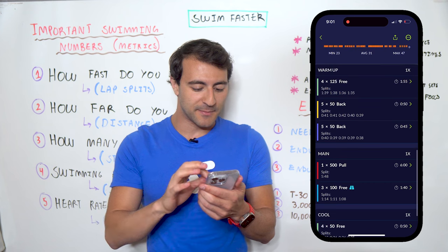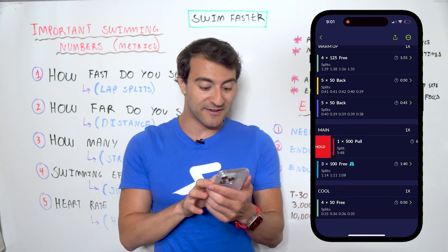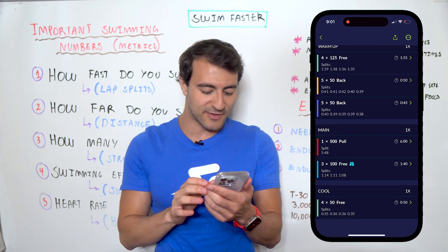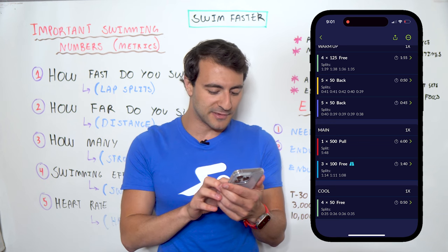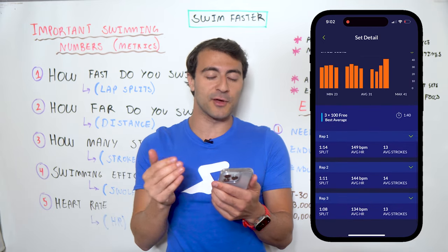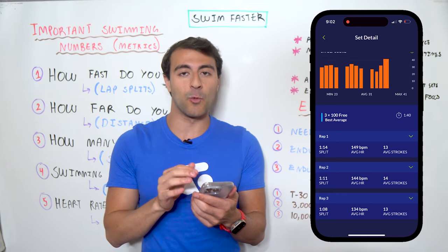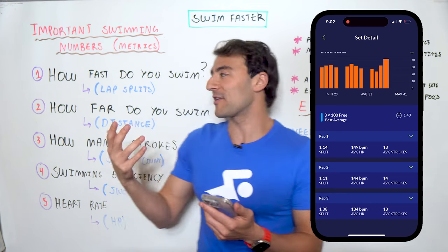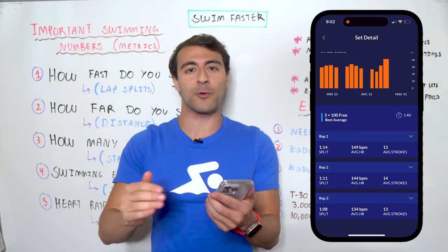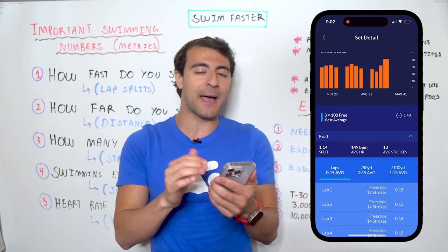I'll talk about heart rate and strokes per lap and what all these graphs mean, but first let me scroll down and give you an overview of the workout. The main set was a 500 freestyle pull and then three 100s freestyle — it looks like I descended. Let's tap in on those three 100s: splits of 1:14, 1:11, and 1:08.